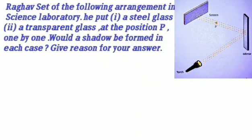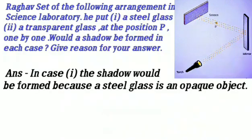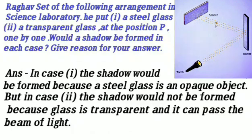Answer: In case first, the shadow would be formed because a steel glass is an opaque object. In case second, the shadow would not be formed because the glass is transparent and it can pass the beam of light.